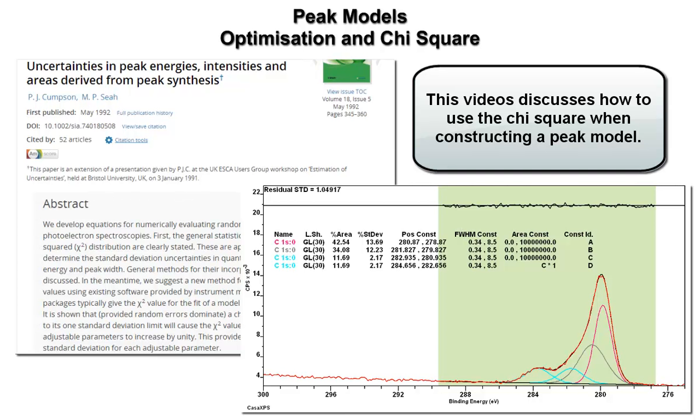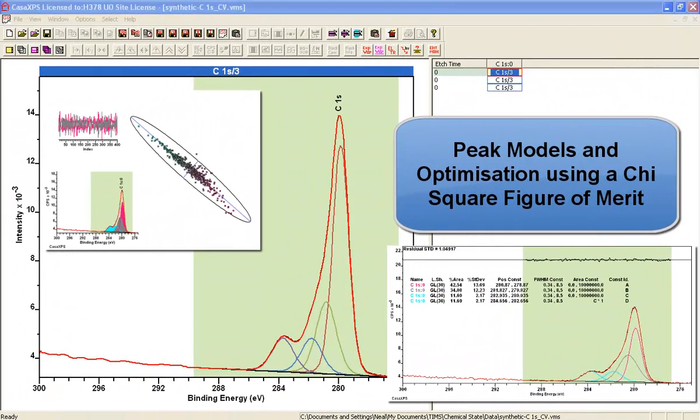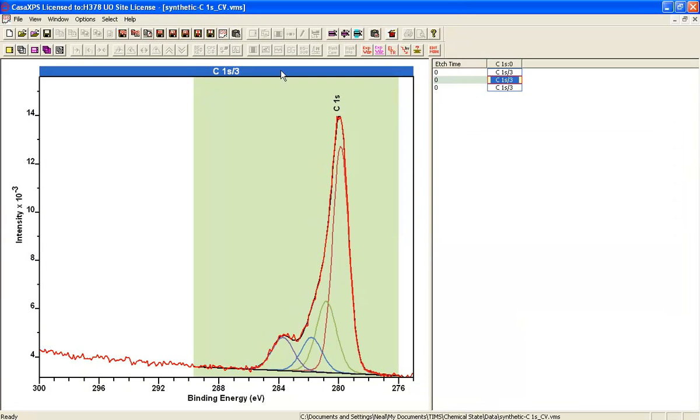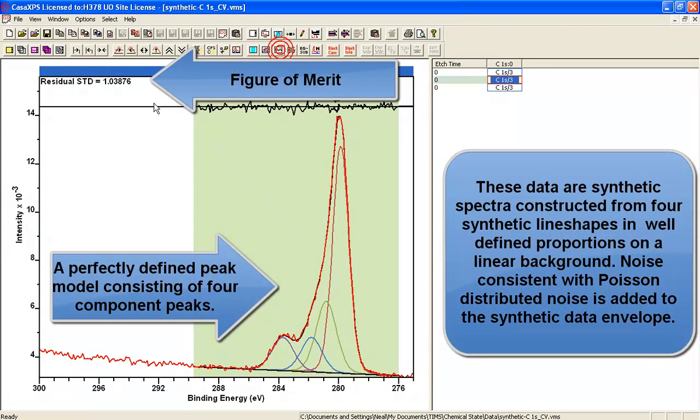We're going to investigate in this video how the chi-square influences a peak model. We're going to do this using a set of synthetic data that has been created from a set of four component peaks and a linear background.